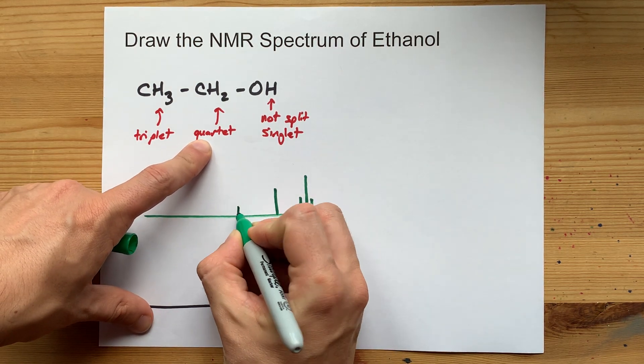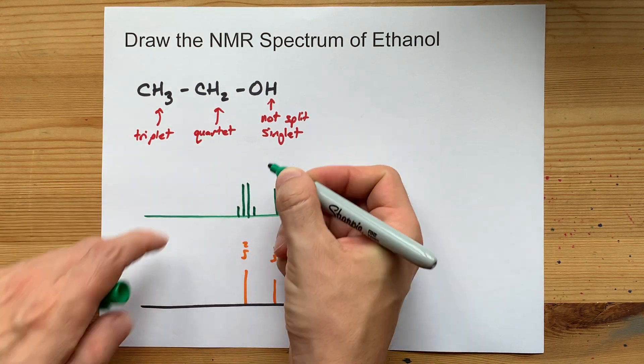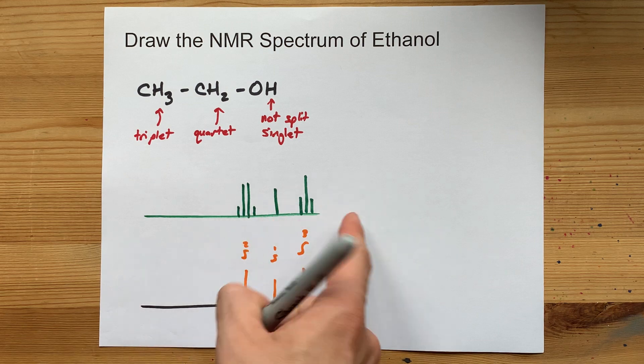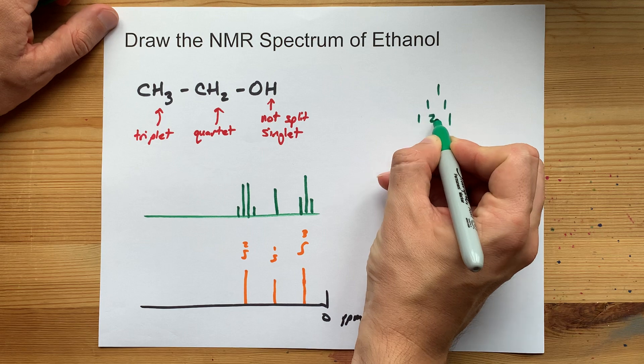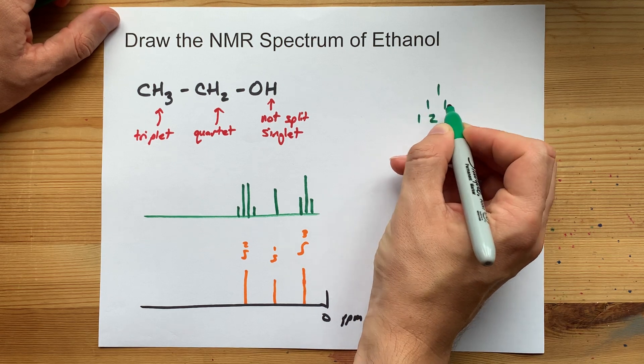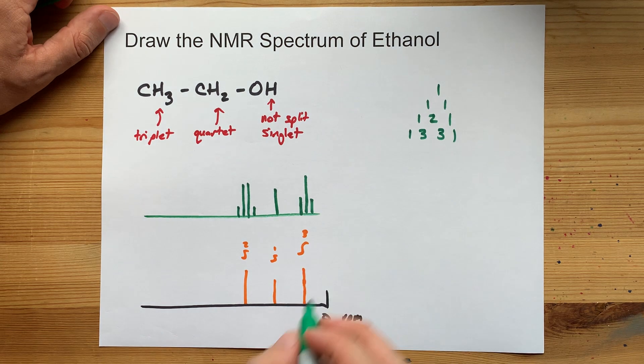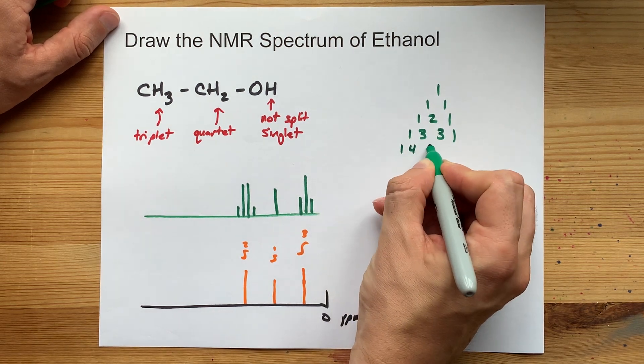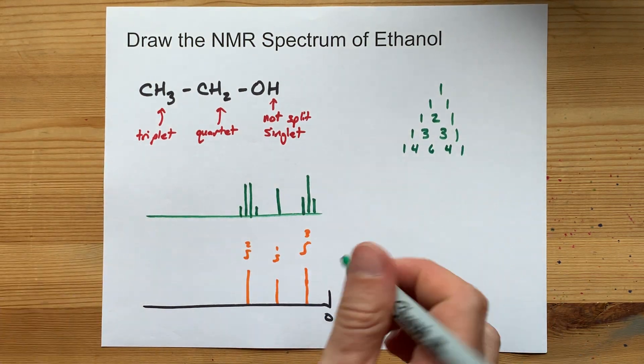Quartets are often in a 1 to 3 to 3 to 1 ratio. If you're wondering how I memorized those, those actually come from Pascal's triangle, where each of these numbers is the sum of the two above it. When you split a peak multiple times, you end up with peaks that are in these ratios.